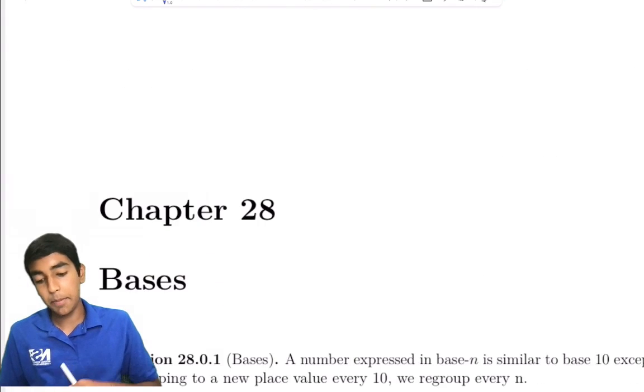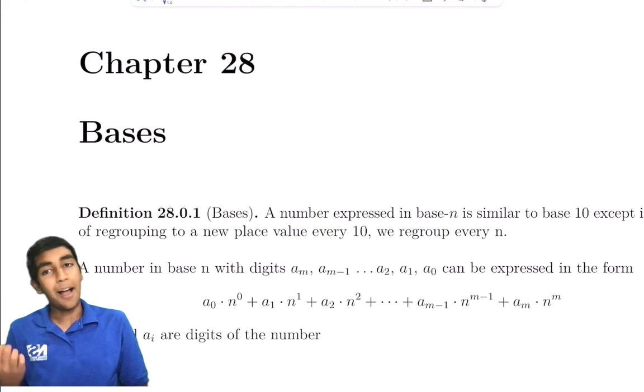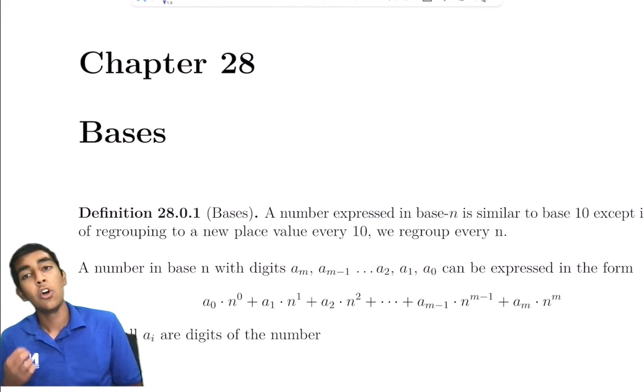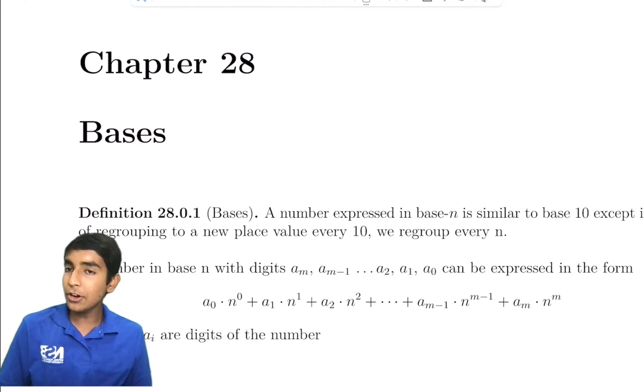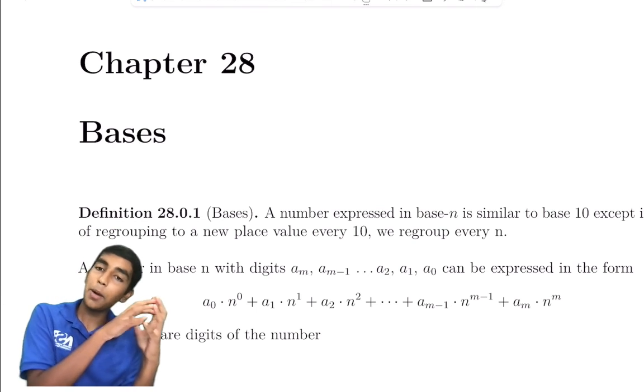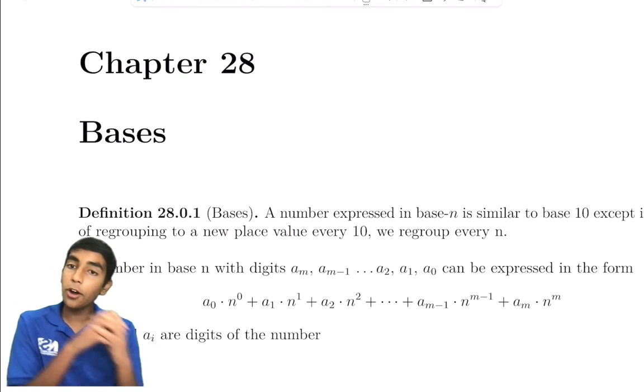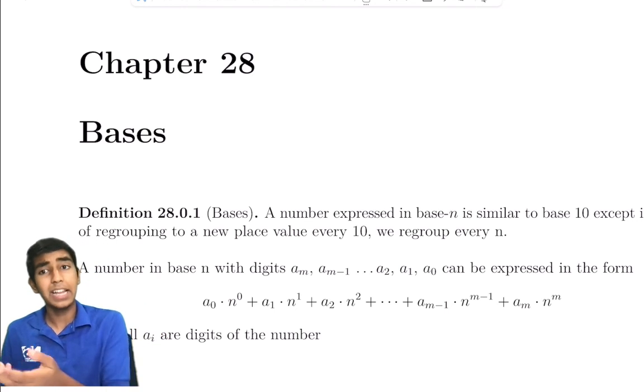But next off, we're talking about bases. So I'm sure you're all familiar with base 10. For every 10, we regroup to the tens digit. But we don't always regroup by 10. We can regroup by 7s, by 4s, by 2. You've probably heard of binary before.